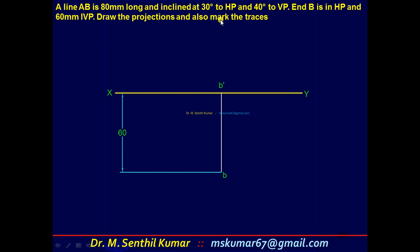Draw XY. Mark here end B is in HP and 60 above VP. So far we have seen the left end as the hinge point where we tilted the line, but here we have to consider the right end as the hinge point. Both are correct.